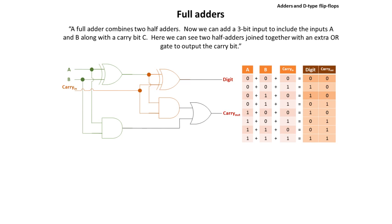1, 0, and 0 gives us 1. 1, 0, and 1 gives us 2, which is 1 0, so 0 carry the 1. 1, 1, and 0 is the same. In the final situation, we have 1, 1, and 1, which is 3, but in binary that's 1 1. So there's a 1 in the digit column and then we'll be carrying 1 to the second column.